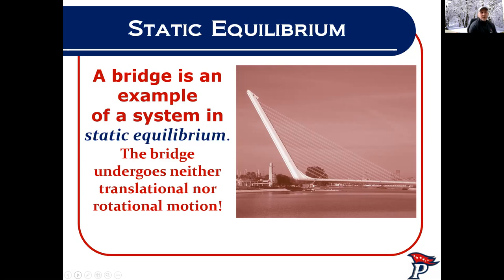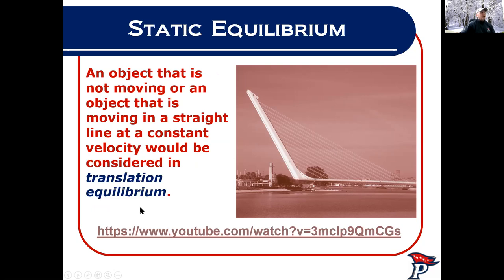We don't want our house to move. We don't want bridges to move. We don't want the school to move when you're walking around. So we build these things to be in static equilibrium — so they're not going to move at all. Civil engineers figure out the live loads and the dead loads. A dead load would be like snow on top of a roof; cars driving over a bridge is more of a live load. In the end, we want things to stay in equilibrium.